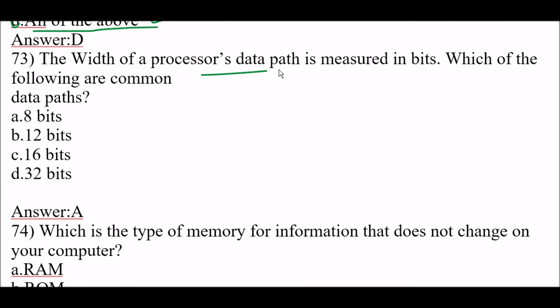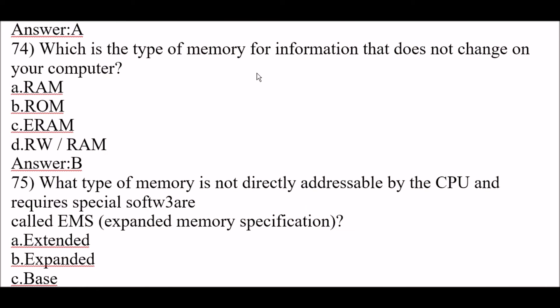Next question: the width of a processor's data path is measured in bits. Which of the following are common data paths? The right answer is option A, 8 bits. Next question: which is the type of memory for information that does not change on your computer? The right answer is option B, ROM. ROM is the type of memory for information that does not change.